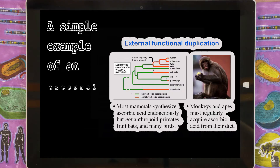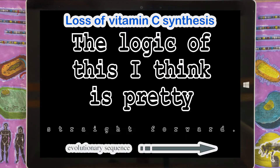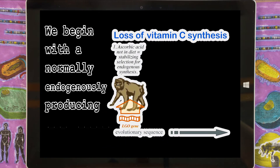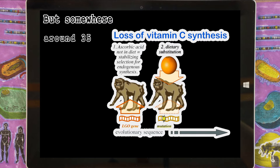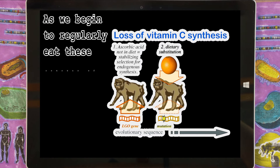This time, redundancy isn't caused by gene duplication, but rather by the environment taking on some of the functions of the organism. A simple example of an external functional duplication occurred with respect to the synthesis of ascorbic acid — vitamin C. Most other animals, from fish to rats, can produce their own vitamin C endogenously. But primates are different — our bodies can't make it on their own, so we need to eat fruit regularly. We begin with a normally endogenously producing gene in the genome, but somewhere around 35 million years ago, the ancestors of monkeys and apes began to eat fruit regularly, providing an external duplication of this function.